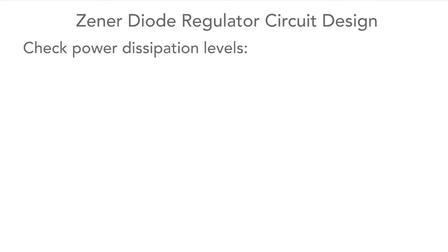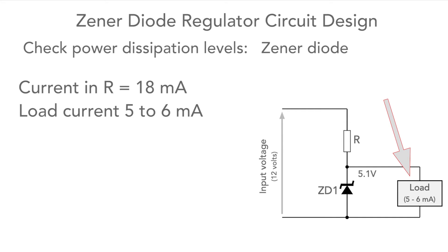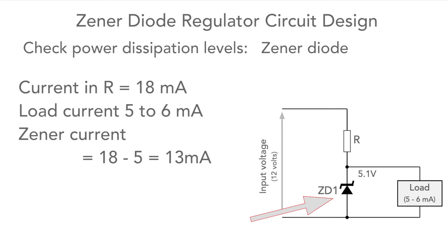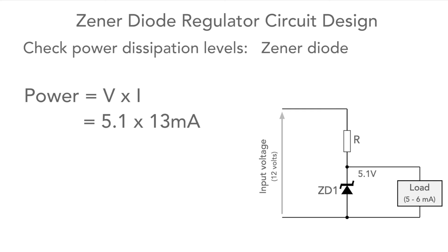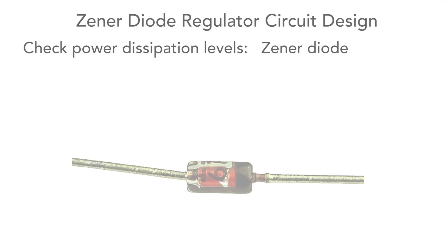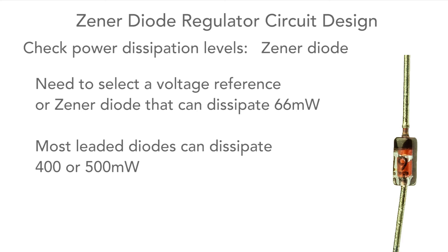We also need to check the dissipation in the Zener diode. The current flowing in the resistor is 18 milliamps and the current flowing in the load is between 5 and 6 milliamps, meaning the maximum current that will flow into the Zener is 18 minus 5, or 13 milliamps. Using power equals voltage times current: 5.1 volts times 13 milliamps equals 66.3 milliwatts. Most small leaded Zener diodes have a 400–500 milliwatt power dissipation so we're quite safe, but always check the specifications for any components you're using.